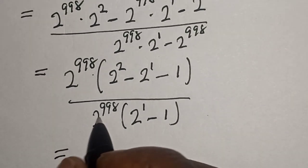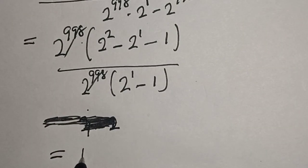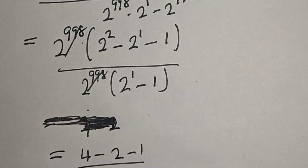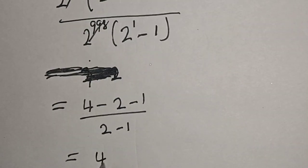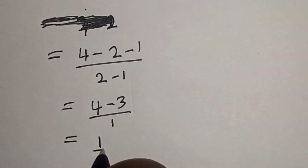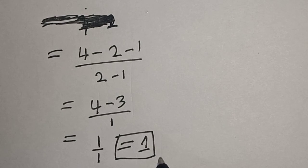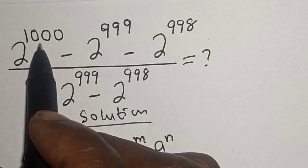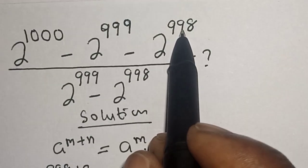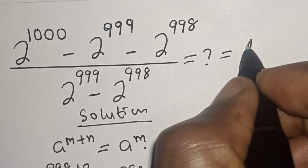After cancellation, this simplifies to 2 squared minus 2 raised to power 1 minus 1, which is 4 minus 2 minus 1 equals 1, over 1. So 4 minus 3 equals 1. This is equal to 1, and that is our final answer. Therefore, 2 raised to power 1000 minus 2 raised to power 999 minus 2 raised to power 998, divided by 2 raised to power 999 minus 2 raised to power 998, is equal to 1.